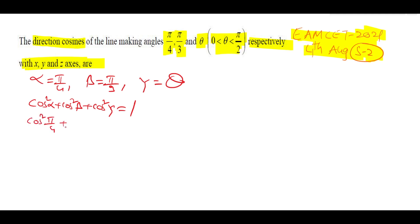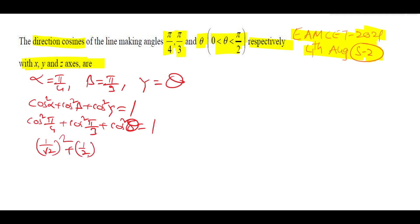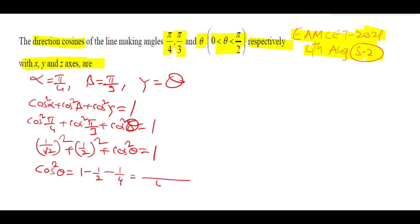So cos²(π/4) + cos²(π/3) + cos²θ = 1. cos(π/4) = 1/√2, so (1/√2)² = 1/2. cos(π/3) = 1/2, so (1/2)² = 1/4. Therefore cos²θ = 1 − 1/2 − 1/4 = (4−2−1)/4 = 1/4, so cos θ = 1/2.